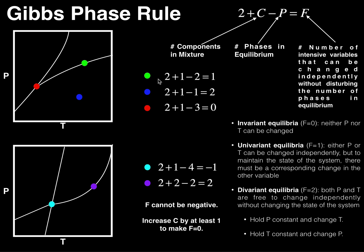Now let's look at some examples of Gibbs phase rule and figure out the F value for the green dot. Unless told otherwise, you always assume a phase diagram has only one component, so C equals one. The green dot is right on a boundary between two phases, so P equals two. Our calculation is 2 plus 1 minus 2, giving us F equals one.